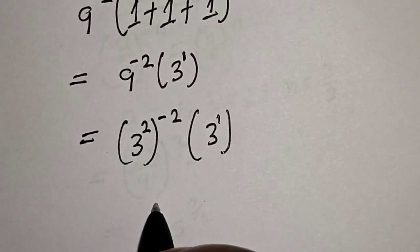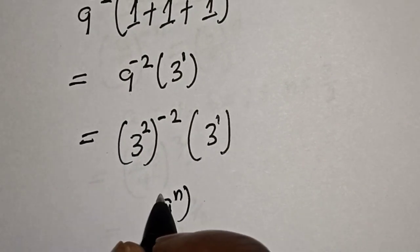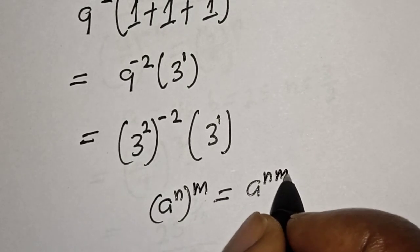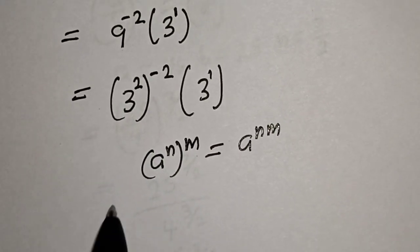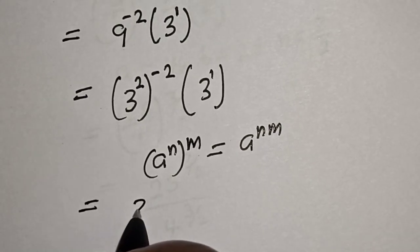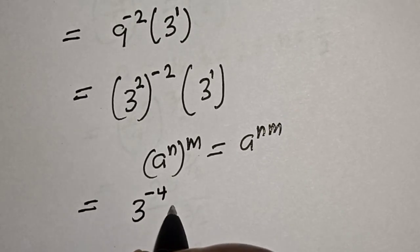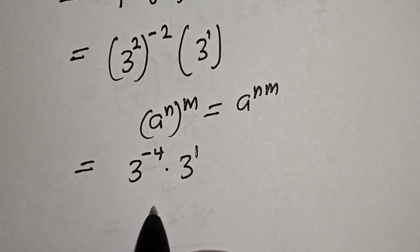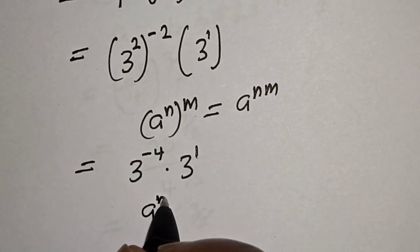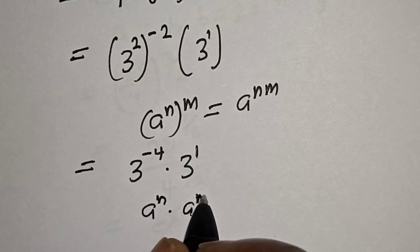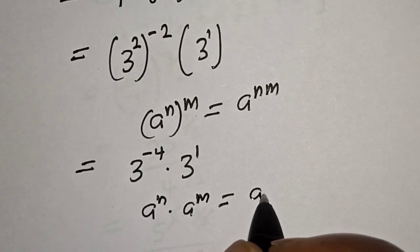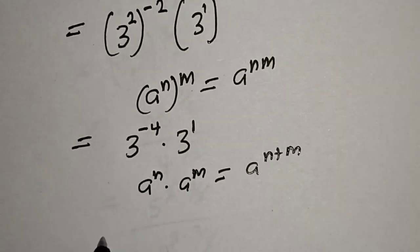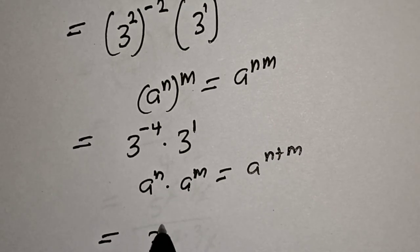Now 9 can be written as 3 squared, so we have 3 squared to the power of minus 2, multiplied by 3 raised to power 1. Remember the rule: if you have a raised to power n, to the power of m, this equals a raised to power n times m. And also, a raised to power n multiplied by a raised to power m equals a raised to power n plus m.